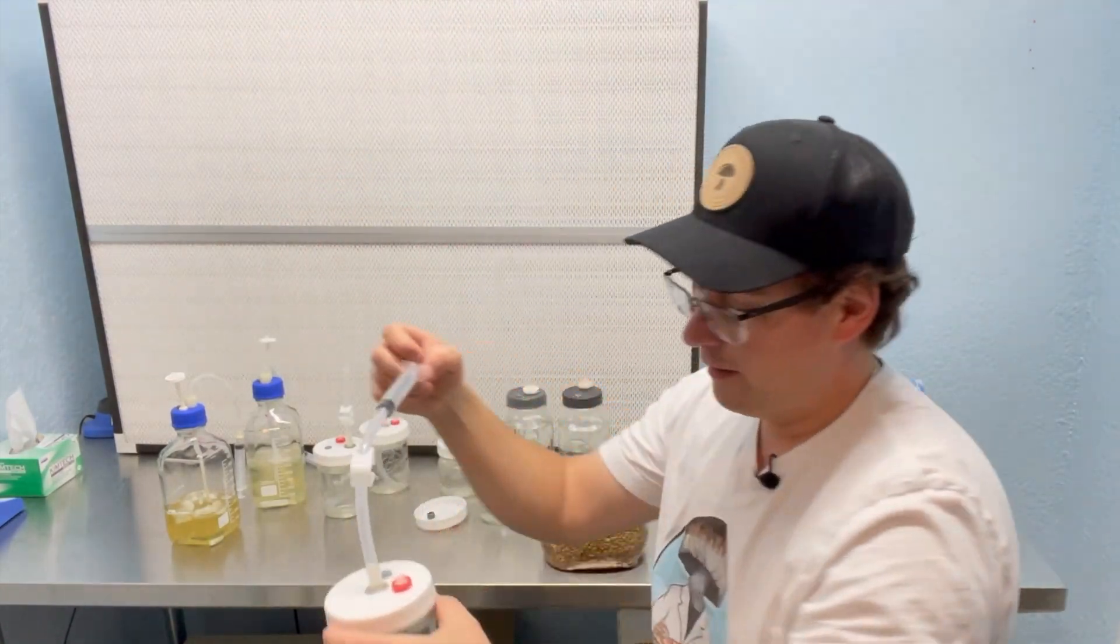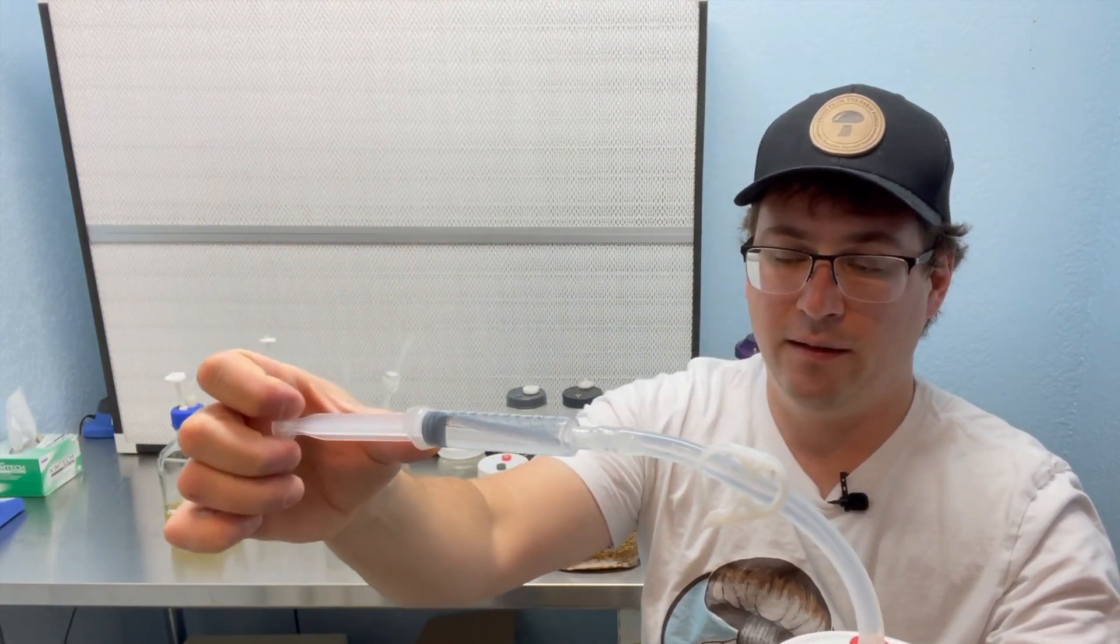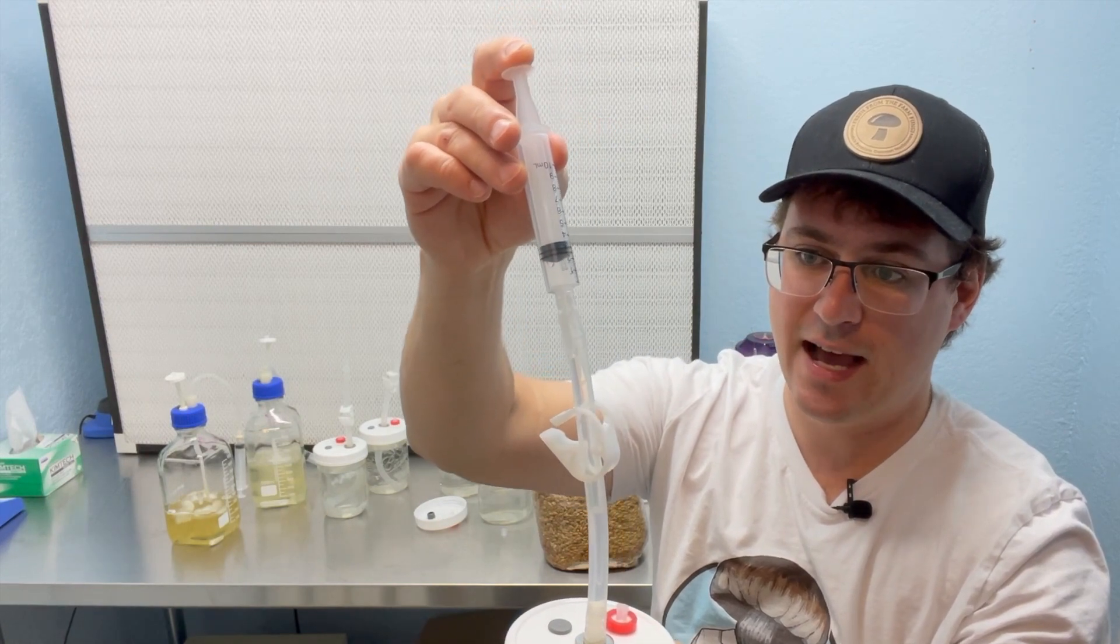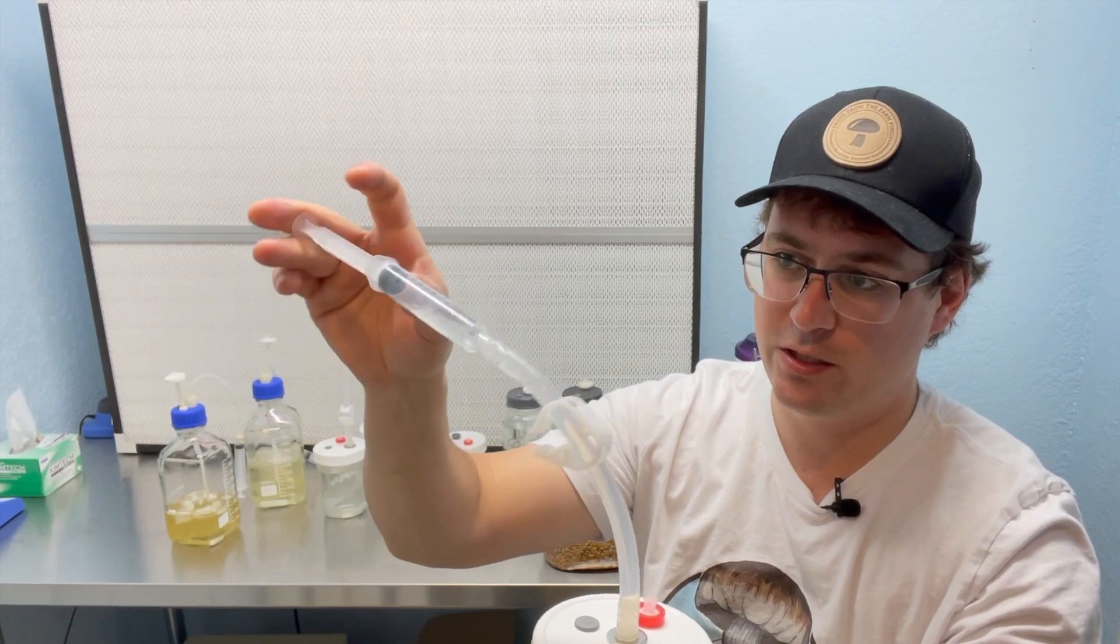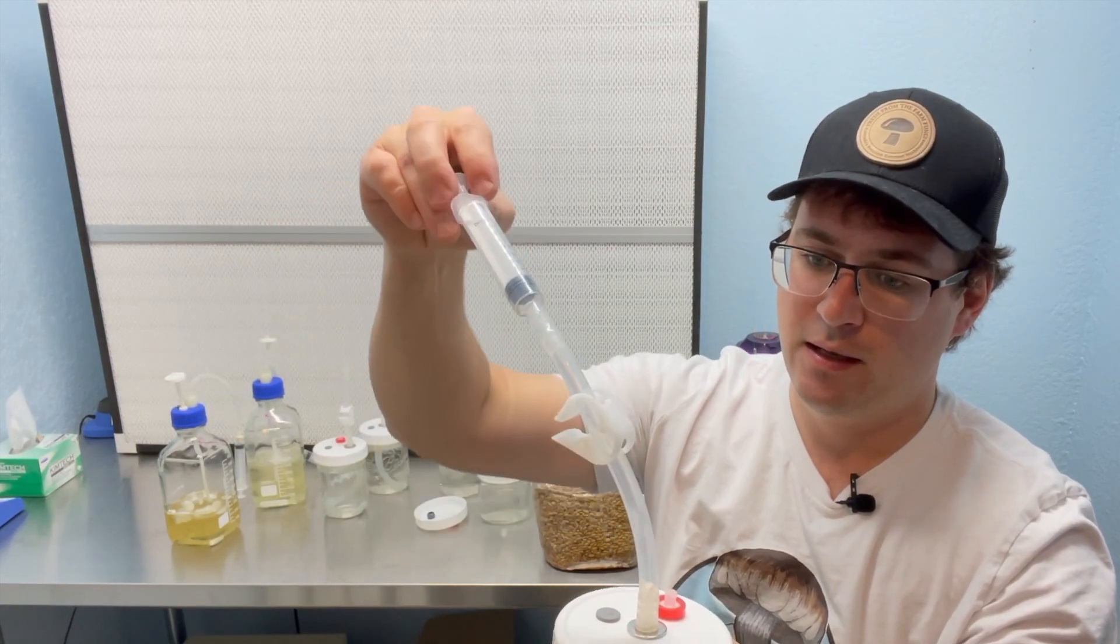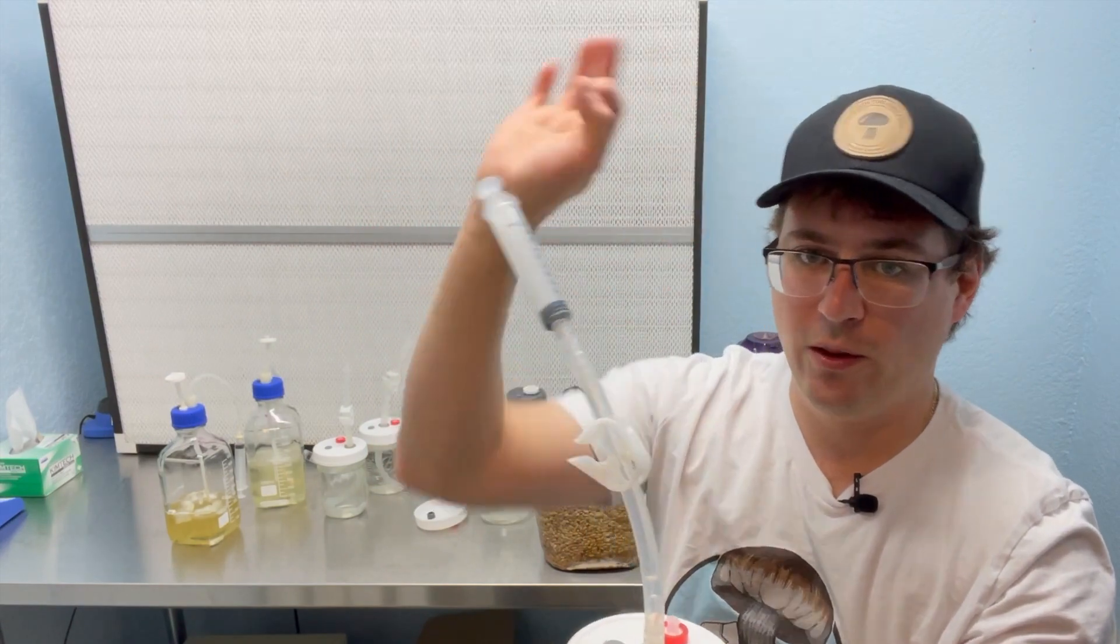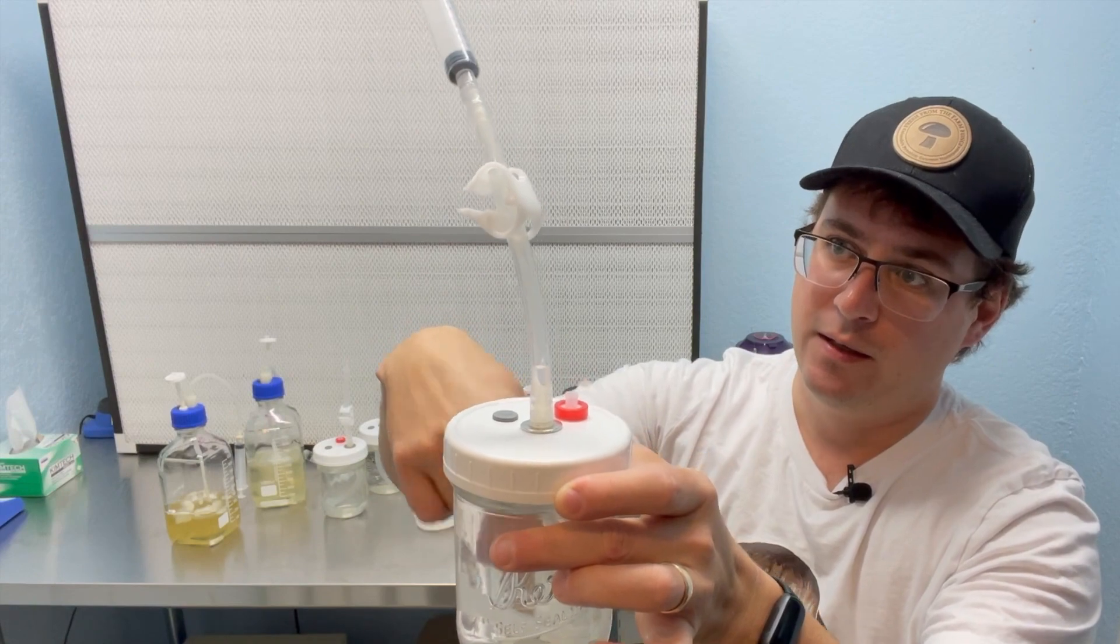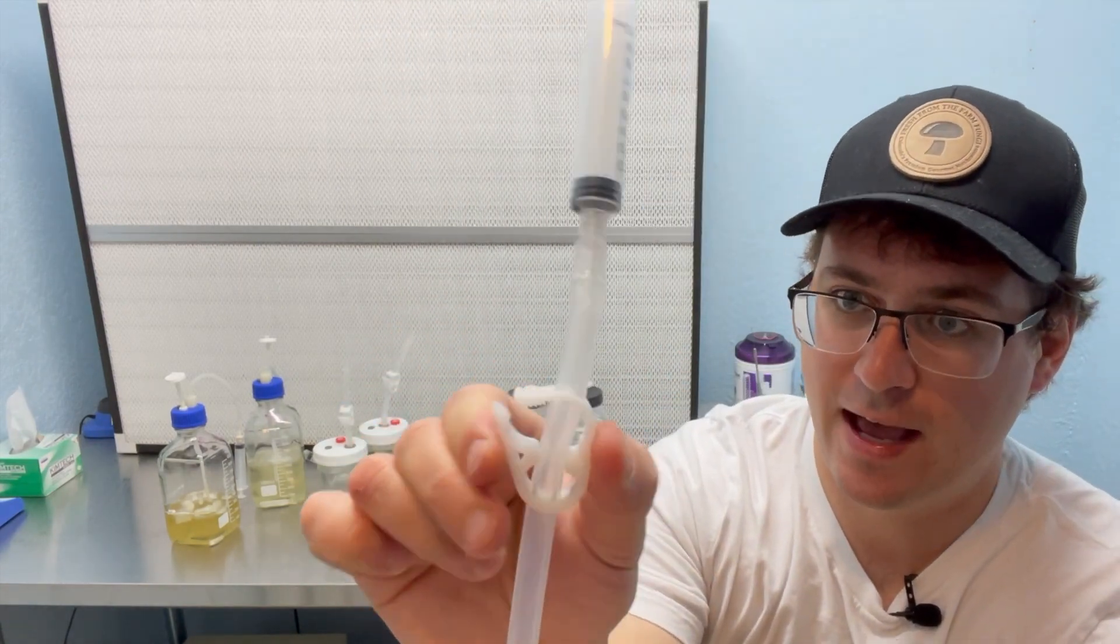And then basically you just draw in that sterile water. And this one does not have a check valve, so you can kind of mix your solution like that, which is nice. But the downside is that when you pull that syringe off, all that fluid will go back into the system. So that is why this clip is in place.